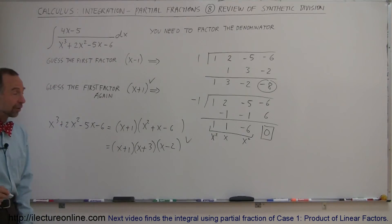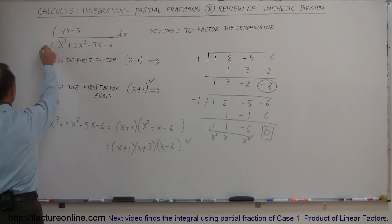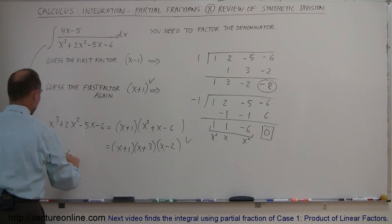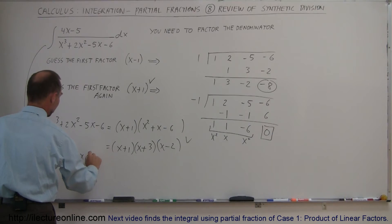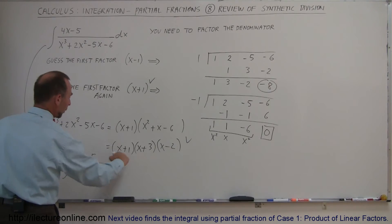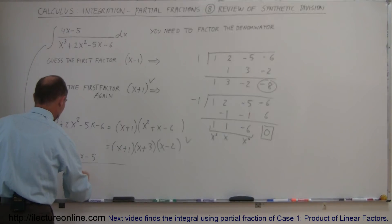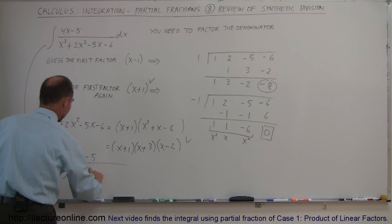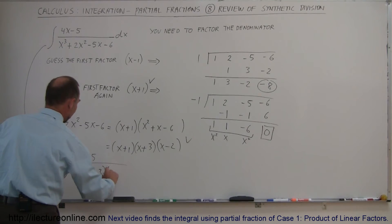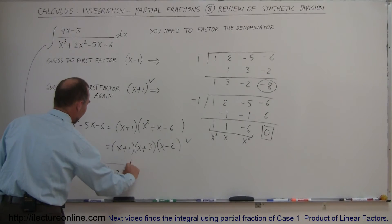Those are the three factors of the denominator, which means I can take this integral and rewrite it. We have now 4x minus 5 in the numerator, and in the denominator, we'll write it as a product of its factors, so I have x plus 1 times x plus 3 times x minus 2, times dx.